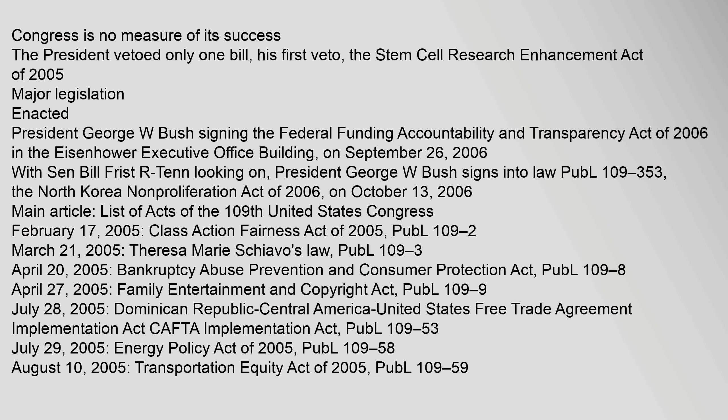Although the number of bills passed by Congress is no measure of its success, the President vetoed only one bill — his first veto — the Stem Cell Research Enhancement Act of 2005. Major legislation enacted: President George W. Bush signing the Federal Funding Accountability and Transparency Act of 2006 in the Eisenhower Executive Office Building on September 26, 2006, with Senator Bill Frist (R) looking on. President George W. Bush signs into law PUBL 109-353, the North Korea Nonproliferation Act of 2006, on October 13, 2006.